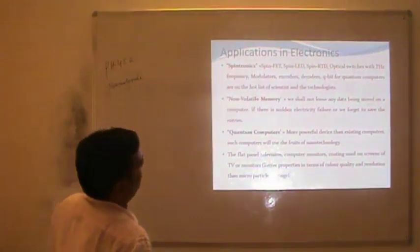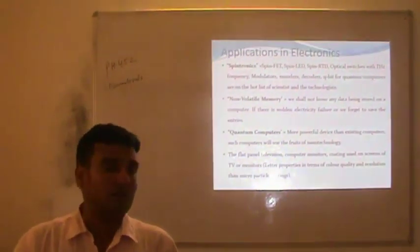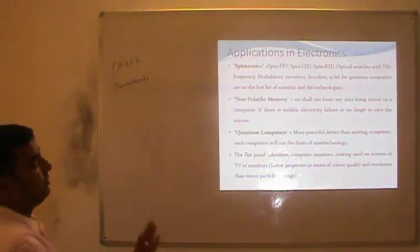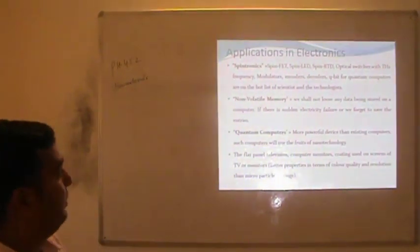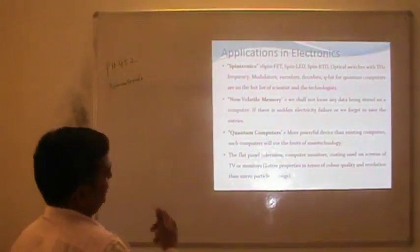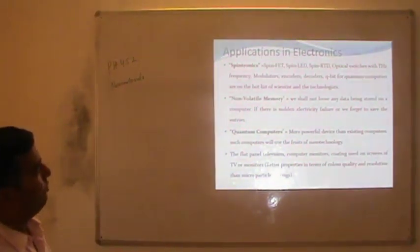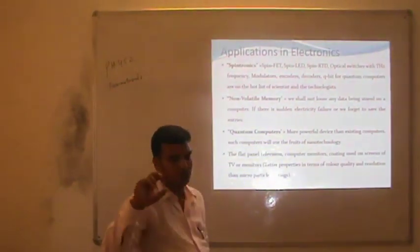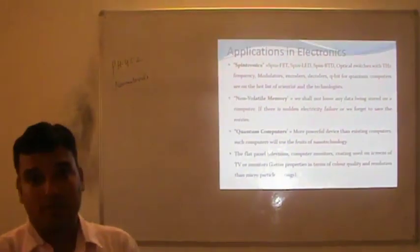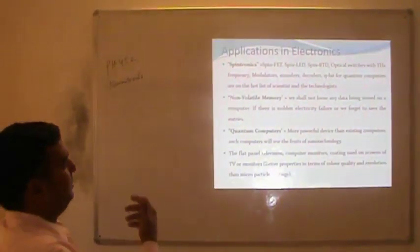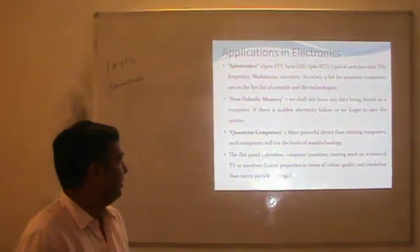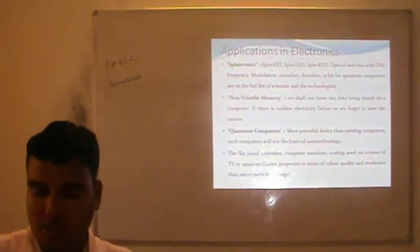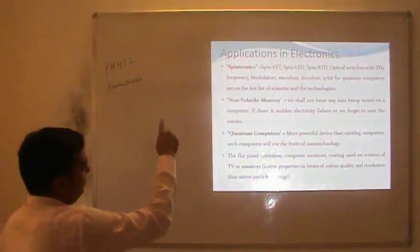There are a number of spintronic devices already present — but remember, these are still in laboratories, not yet in commercial use. Examples include spin FET, spin LED, spin RTD, optical switches with terahertz frequency. Generally we talk about devices with frequency in gigahertz, but these spin-based devices have capacity to run at terahertz frequency. Modulator, encoder, decoder, and qubit for quantum computers are on the hot list of scientists and technologists.